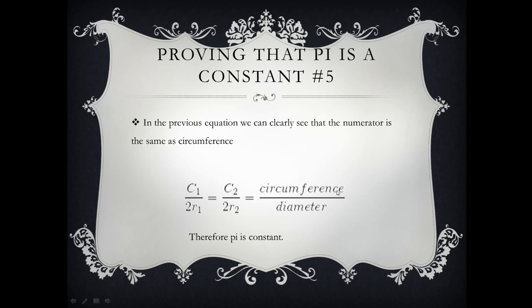So now we replace that and this is what we get. C1 over 2 times the radius of the first circle is equal to the circumference of the second circle over 2 times the radius which is diameter. Now we just proved that Pi is a constant.